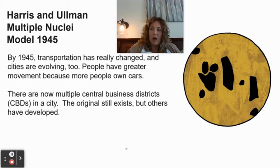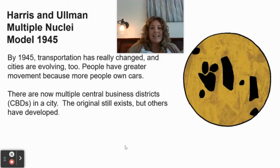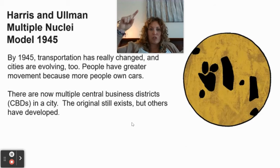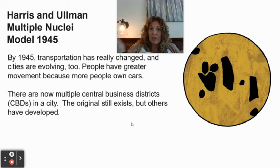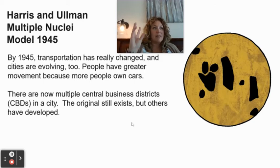Harris and Ullman Multiple Nuclei Model: by 1945, transportation had really changed and cities started to evolve. Post-World War II America saw the birth of automobiles for consumers, and highways and road systems became more prevalent. Now there are multiple central business districts in a city. Denver is a great example: you have downtown Denver with all the skyscrapers, but then also the Denver Tech Center, the area near IKEA, and Aurora with its own central business district.